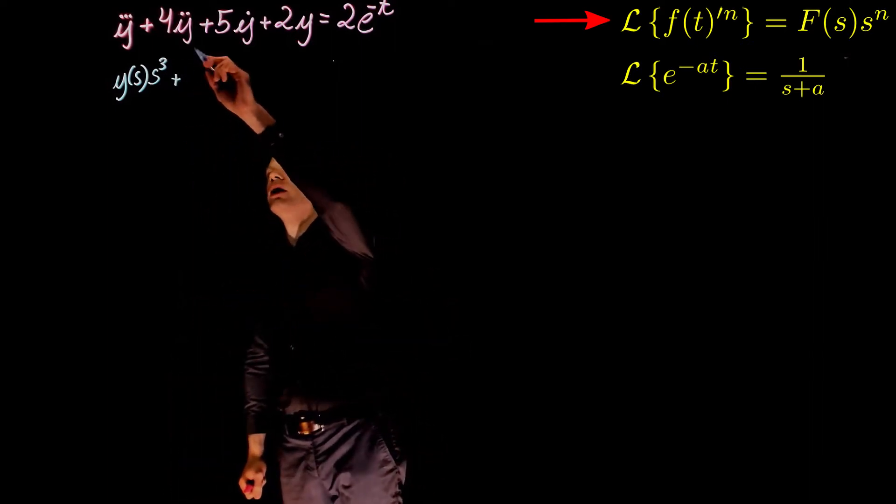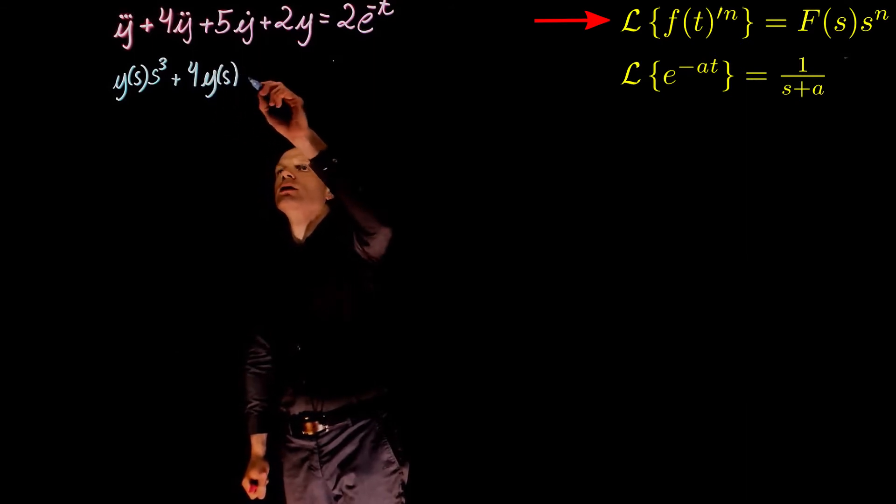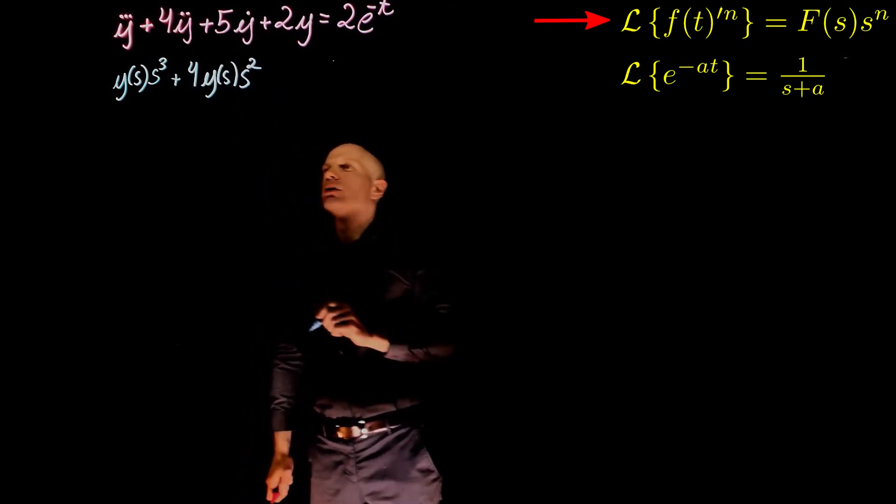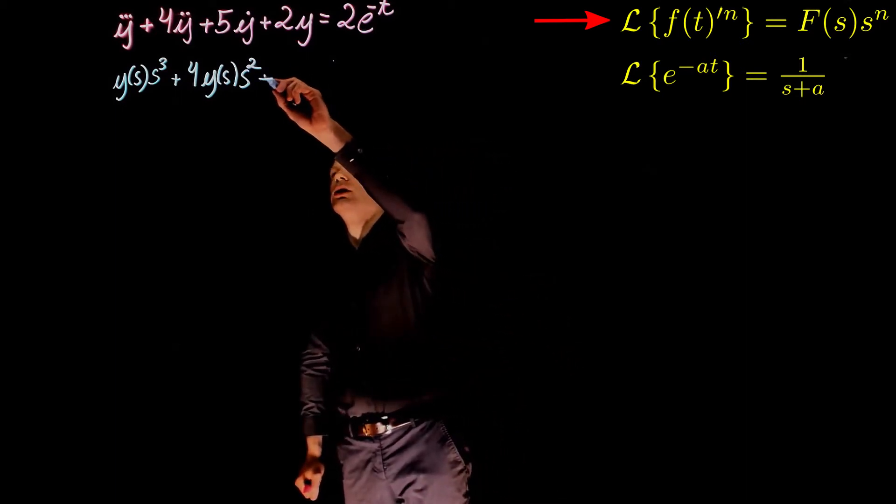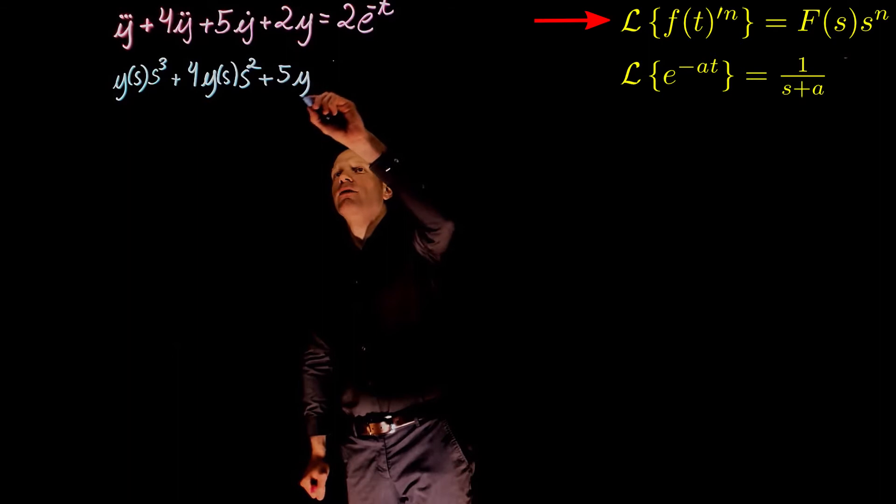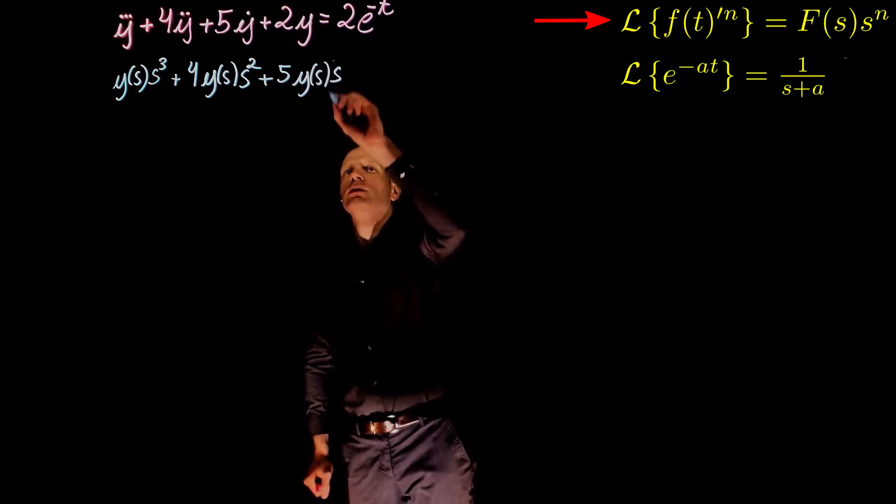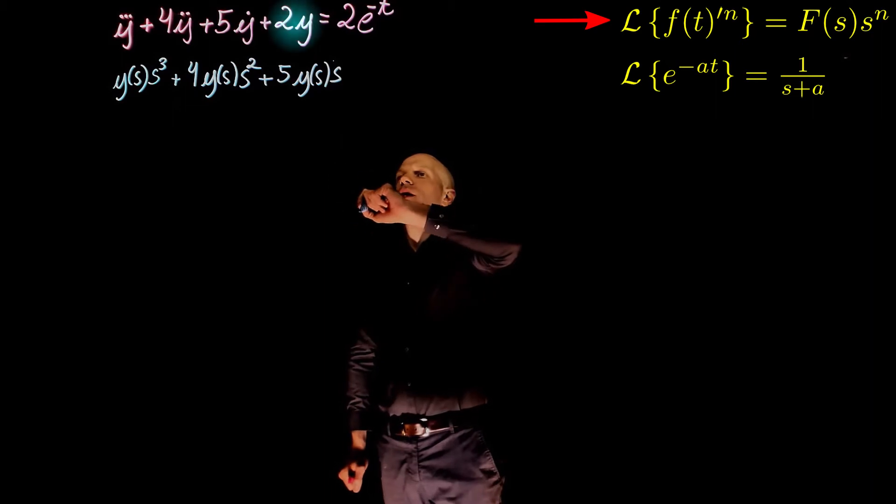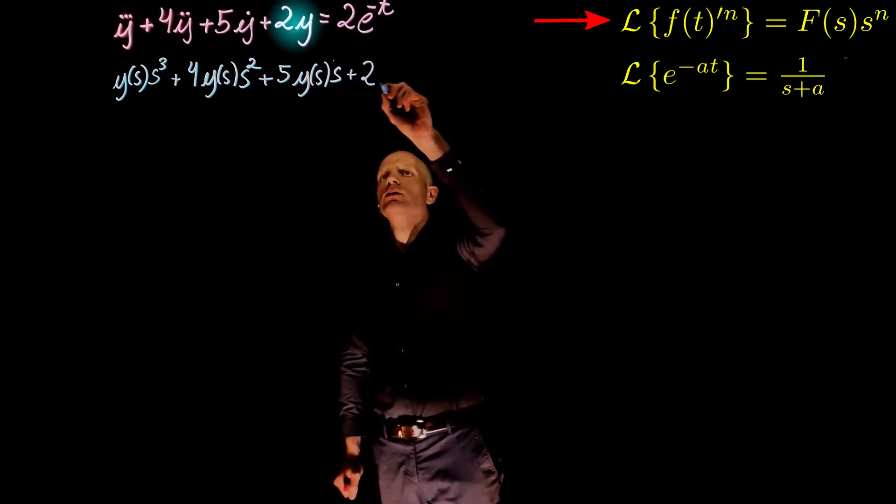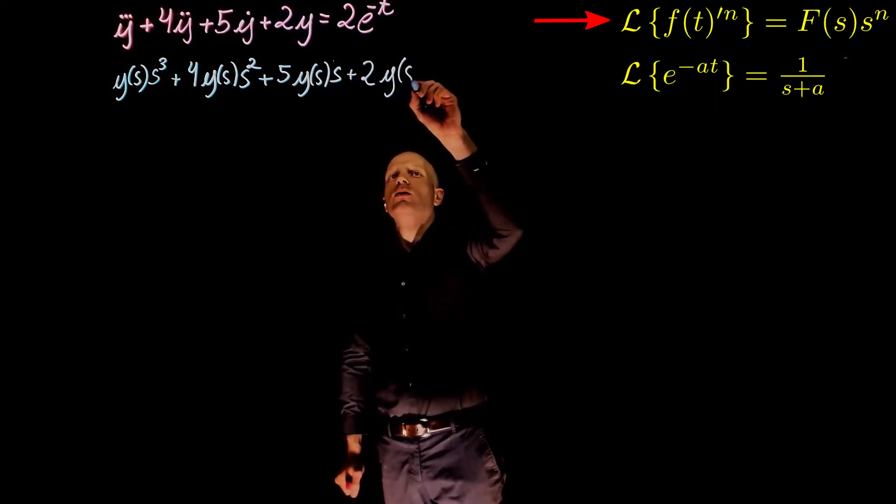For the second term, we have the second derivative. y becomes y(s), and the second derivative, s squared. The third term, we have 5y(s) times s, and the next term is 2 times simply y(s).